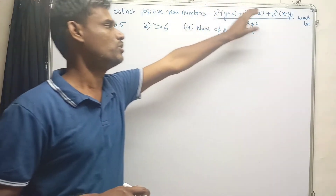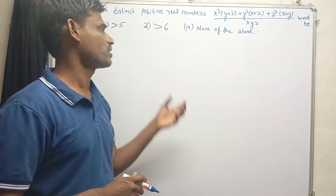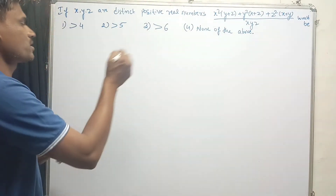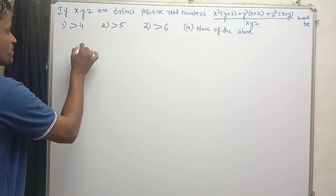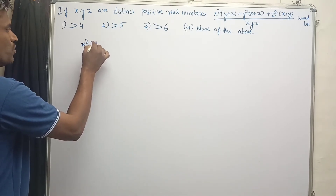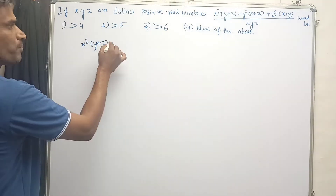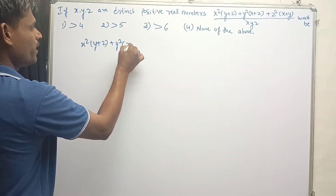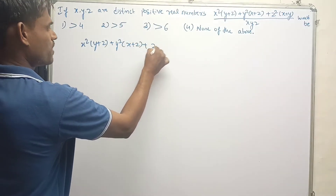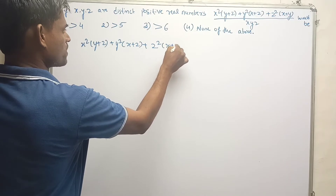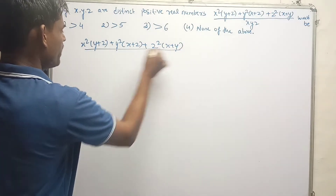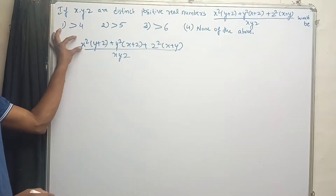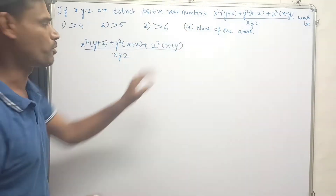Let's try to solve this equation and find which option is the correct one. First I am going to write that expression: x squared into y plus z, plus y squared into x plus z, plus z squared into x plus y, divided by xyz. Let's multiply each term to clear these brackets.